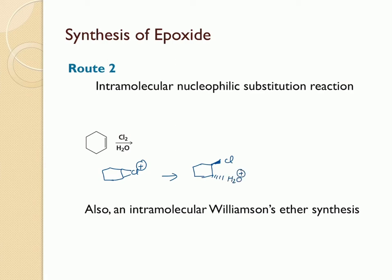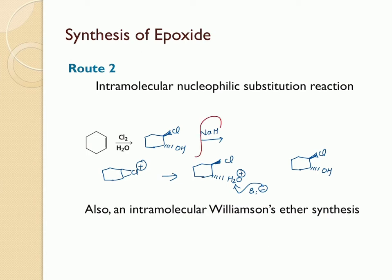In the next step, a base abstracts one of the hydrogens, leading to the formation of a chlorohydrin. Once the chlorohydrin is formed, we react it with NaH, which abstracts the hydrogen from the OH and pushes the electrons onto oxygen, thereby forming the alkoxide ion. This alkoxide ion acts as a nucleophile in an SN2 reaction, forming the epoxide.